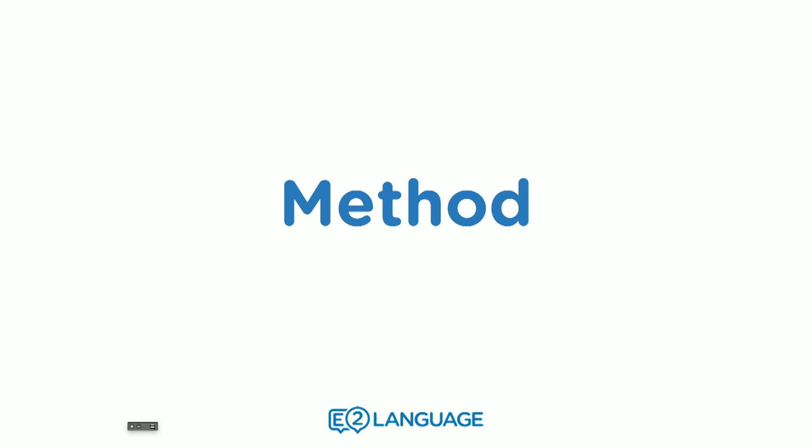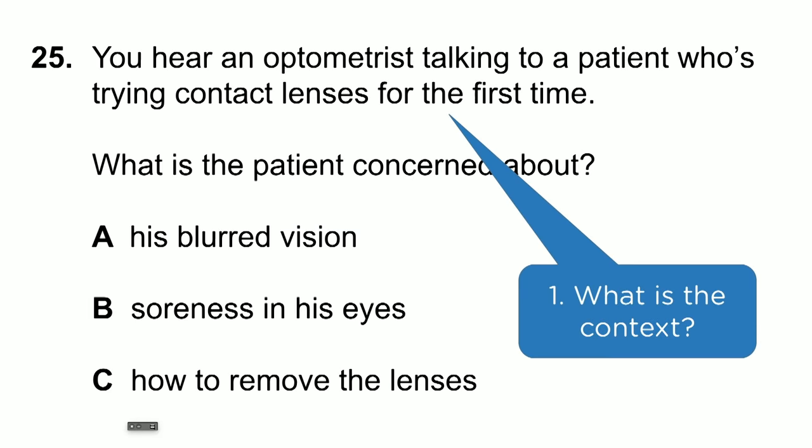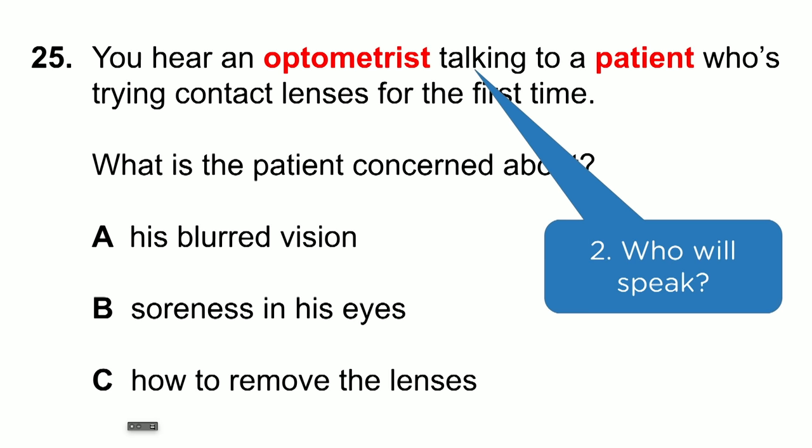So how do we approach this question type? First of all, the context sentence is very important because it will locate you in the particular medical setting in which the audio takes place. And most importantly, it's going to tell you who will speak. For question 25, there'll be two people speaking: an optometrist and a patient. It's important that you know who will be speaking because it will help guide you through the talking.